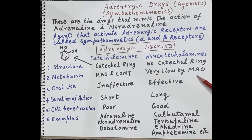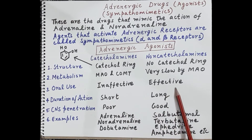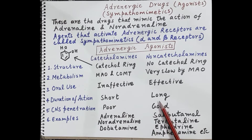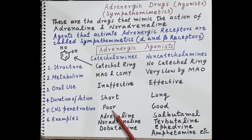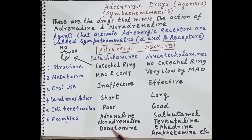Non-catecholamines are also metabolized by monoamine oxidase, but the metabolism is very slow. Regarding oral use, catecholamines are ineffective whereas non-catecholamines are effective orally. Duration of action of catecholamines is very short, whereas non-catecholamines have a long duration of action. CNS penetration of catecholamines is poor, whereas that of non-catecholamines is good. Examples of catecholamines include adrenaline, noradrenaline, and dobutamine. Examples of non-catecholamines include salbutamol, terbutaline, ephedrine, and amphetamine.